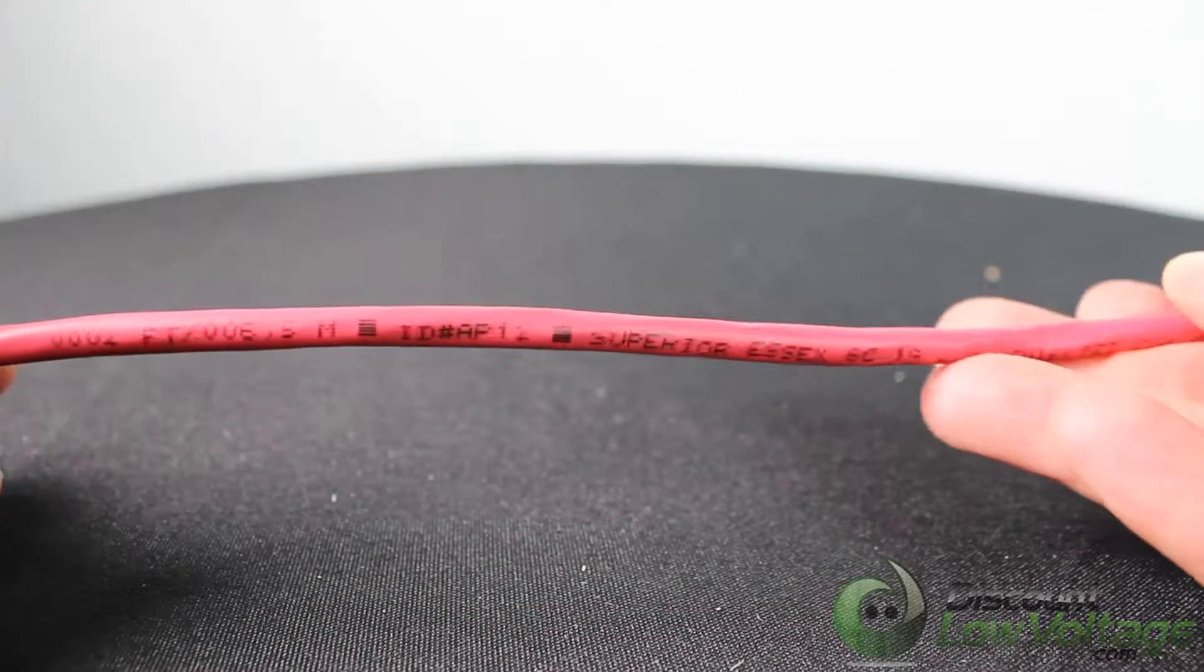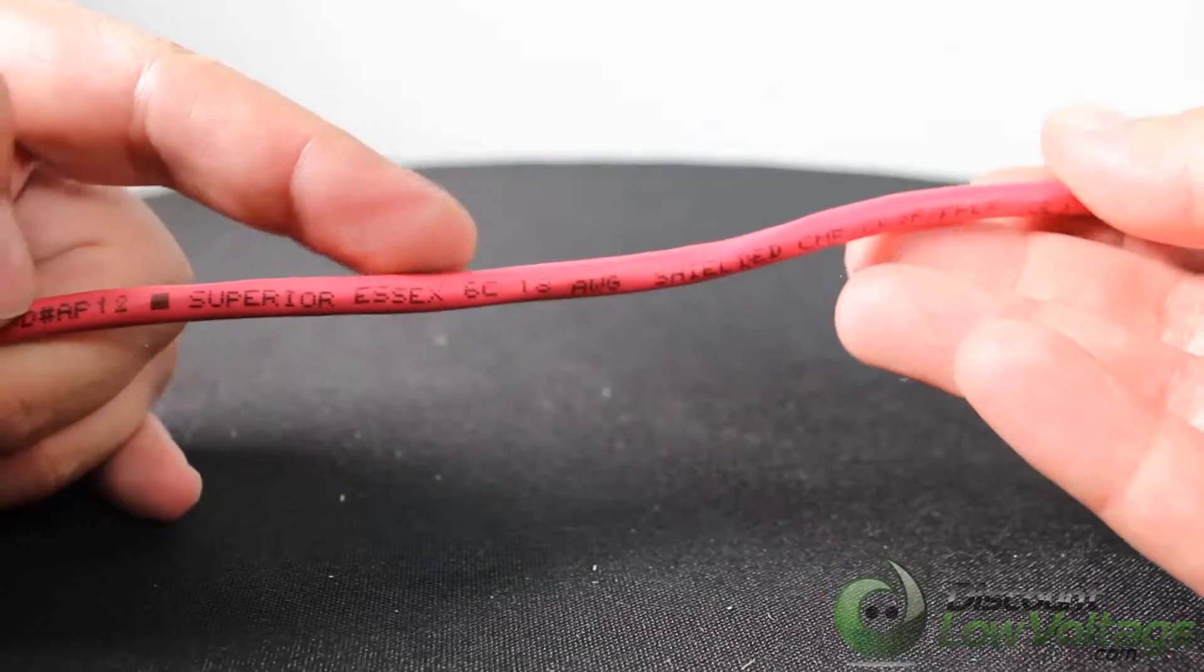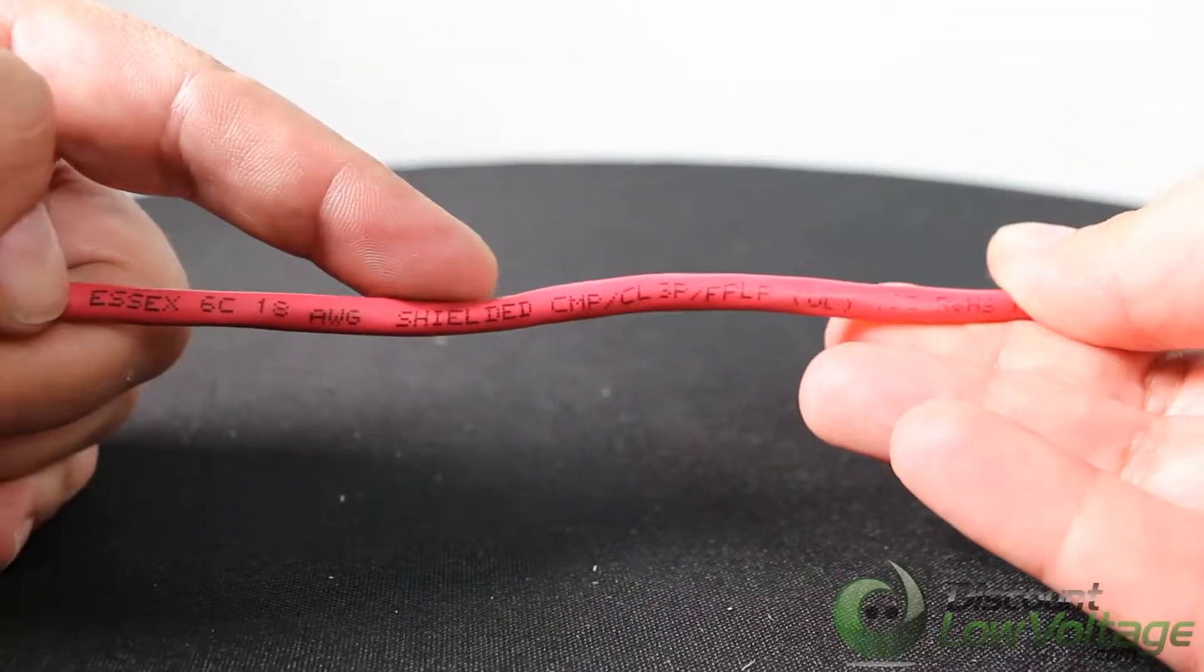This cable is manufactured by Superior Essex. It's a six-conductor cable, 18-gauge, shielded, and plenum-rated, available on a thousand-foot reel.